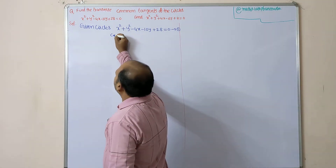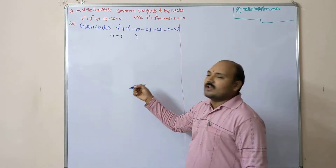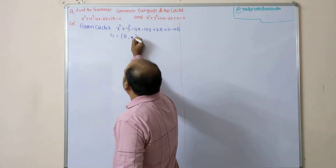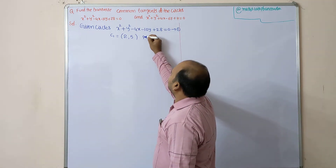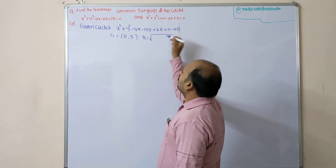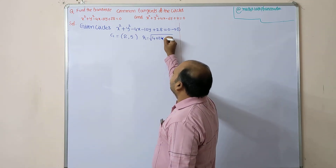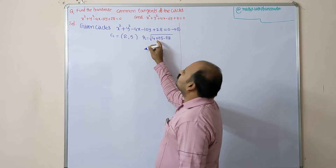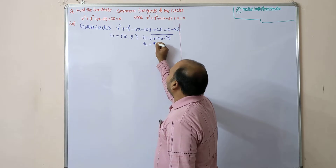The center of the first circle c1 is calculated as (−x coefficient/2, −y coefficient/2), giving c1 = (2, 5). The radius r1 = √(g² + f² − c) = √(4 + 25 − 28) = √1 = 1. So r1 = 1.